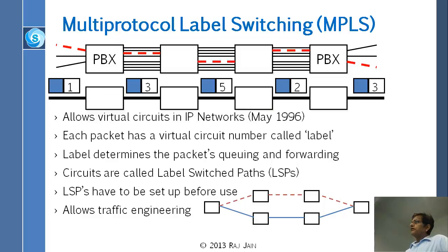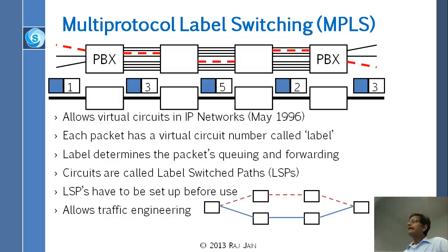If you pick up the phone, it goes to the exchange and the exchange knows that you have picked up the phone. Then you dial a number and the exchange knows that you want to dial to Kansas City, whatever. They find a path and say, you will go from here on wire number 3. You are coming on wire number 1 but you will go on wire number 3. Then in this city you will join to wire number 5, then wire number 2, then wire number 3. That's your circuit. Except that these are virtual circuits because they don't have 2000 fibers connecting — they have one fiber or one wire.